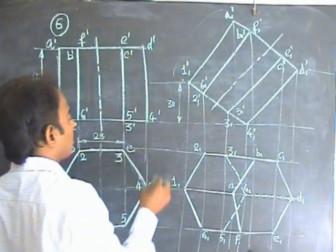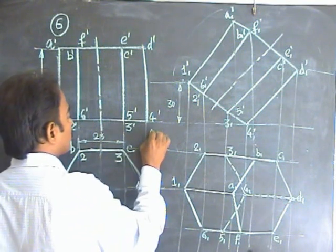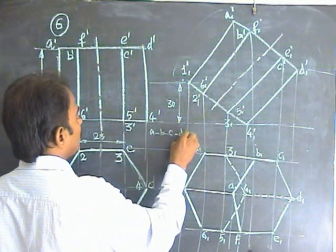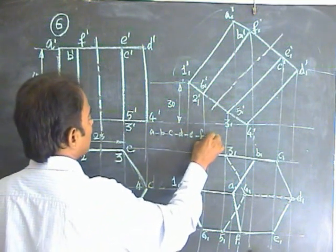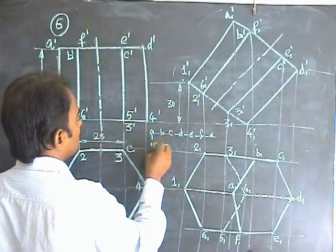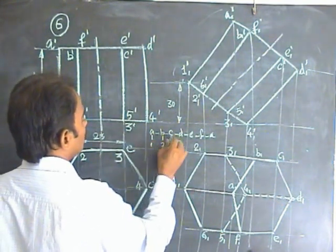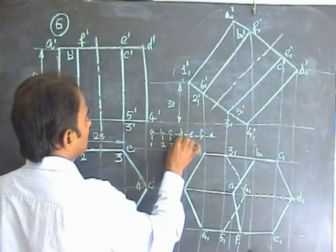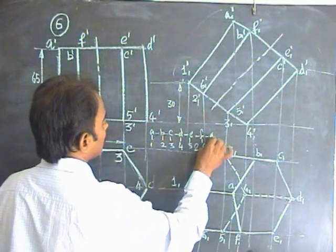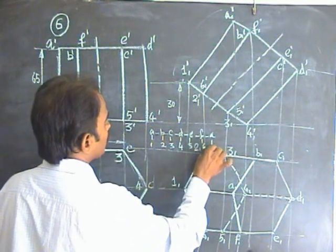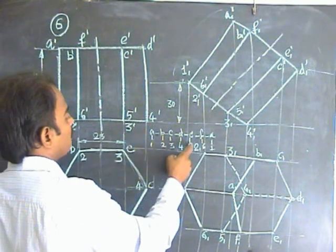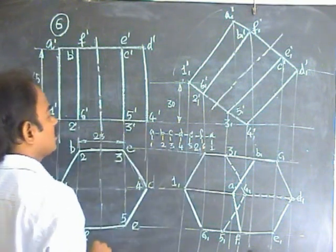The pattern you follow is: first start with A, then connect B, C, D, E, F, then once again go back to A. Afterwards, start with 1, then 2, then 3, then 4, 5, then 6, then 1. So 1A, 2B, 3C, 4D, 5E, 6F and 1A is also possible.